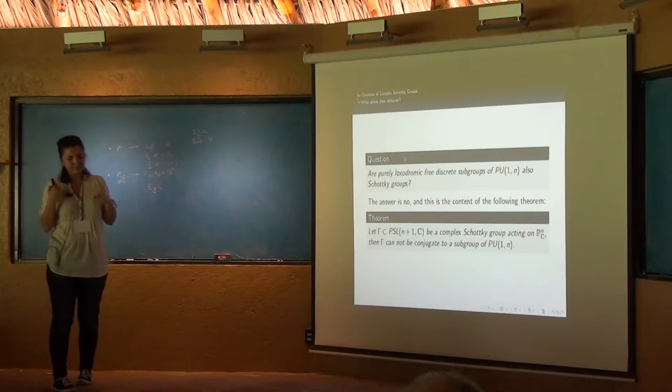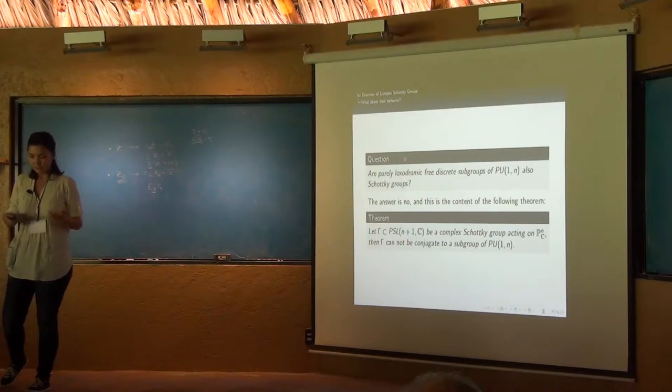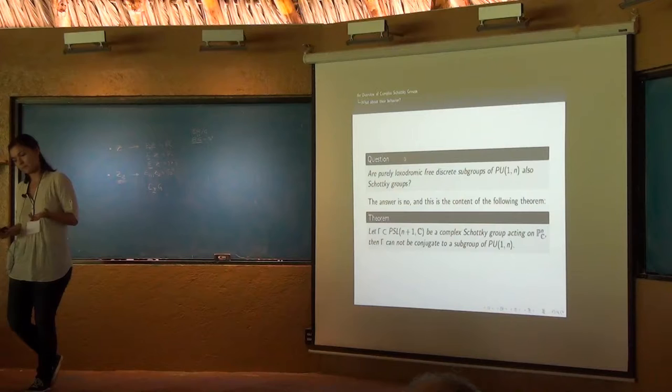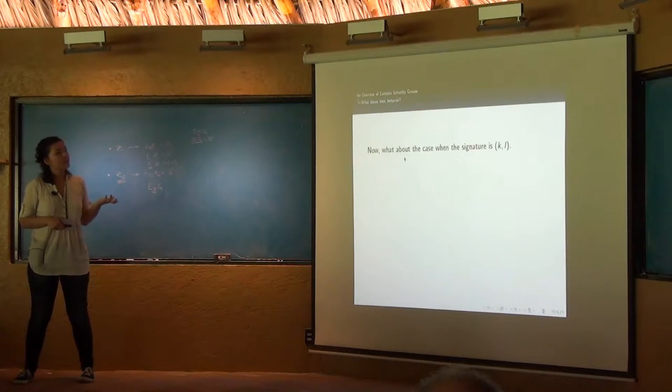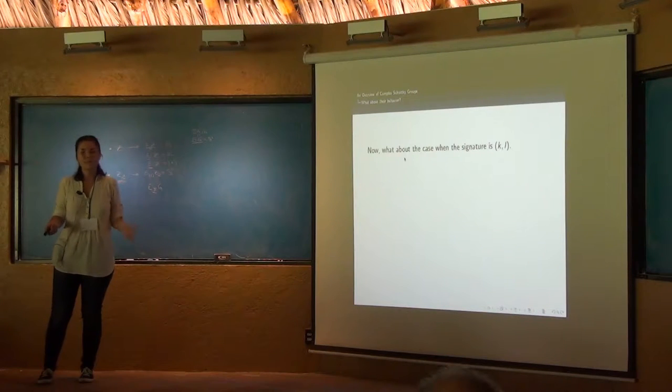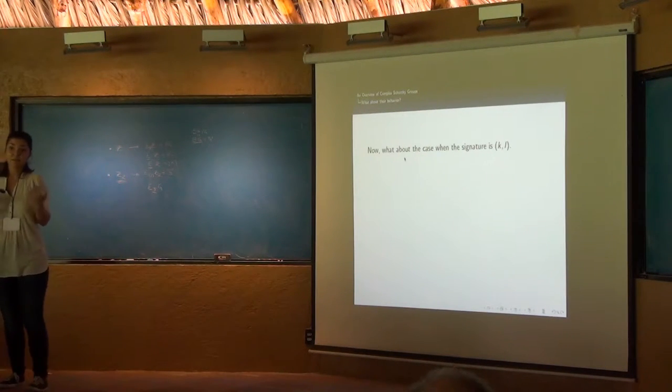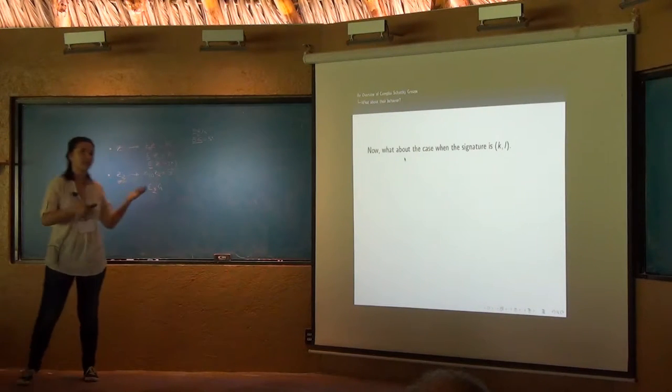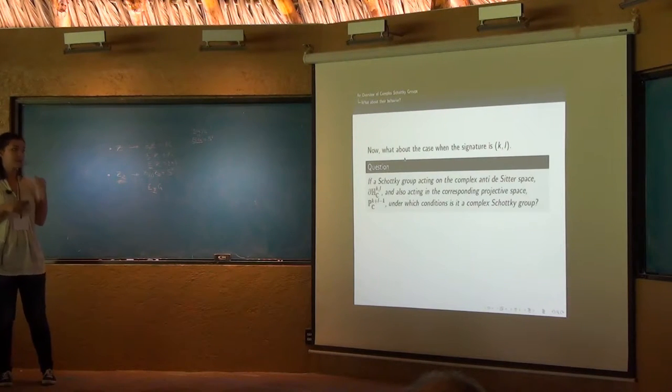But in the work we made a bigger result, a little bit stronger, because what about the signature K,L? Because in signature 1,n it doesn't happen, but what about K,L obviously different from 1,n? So, question.